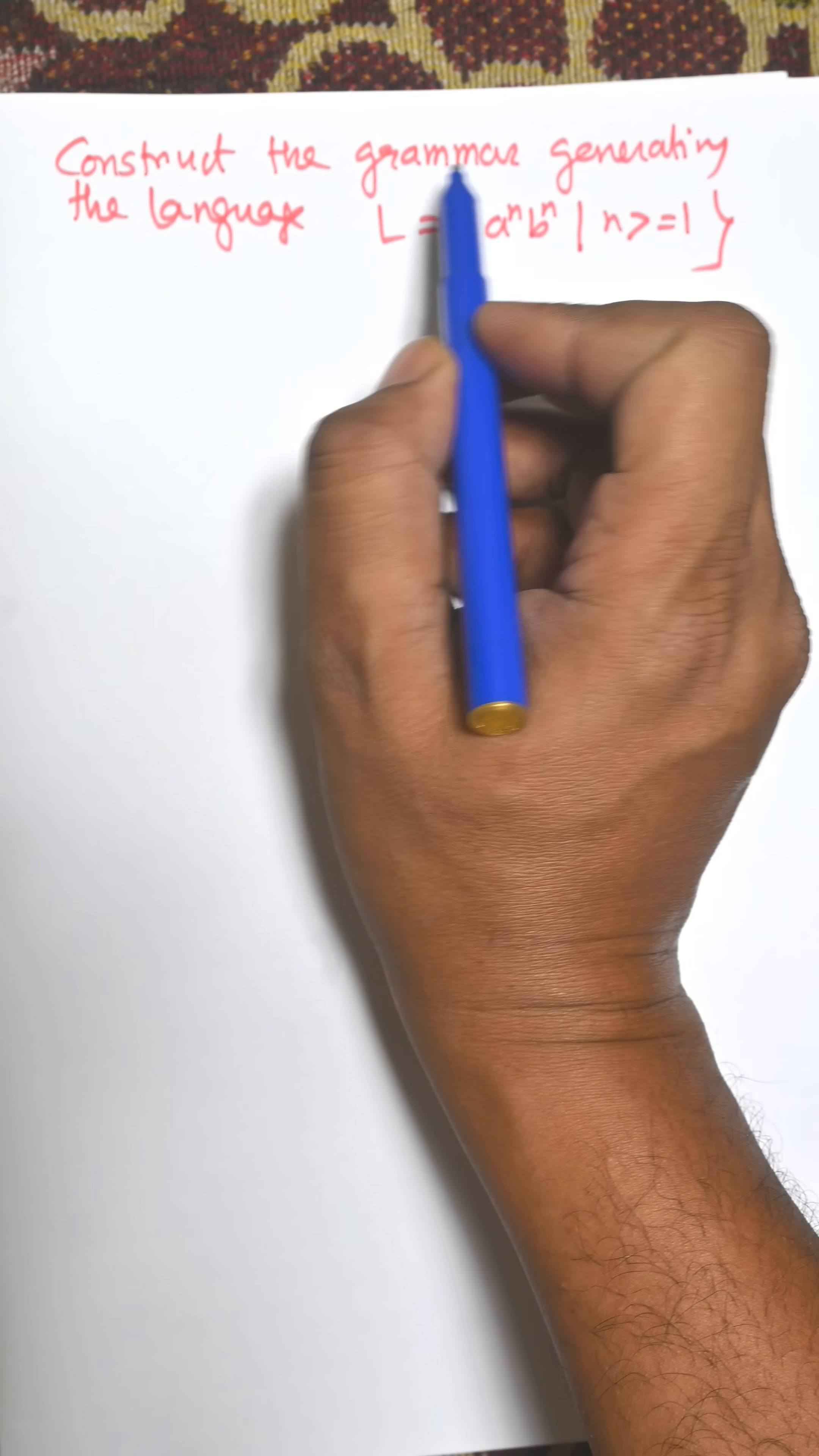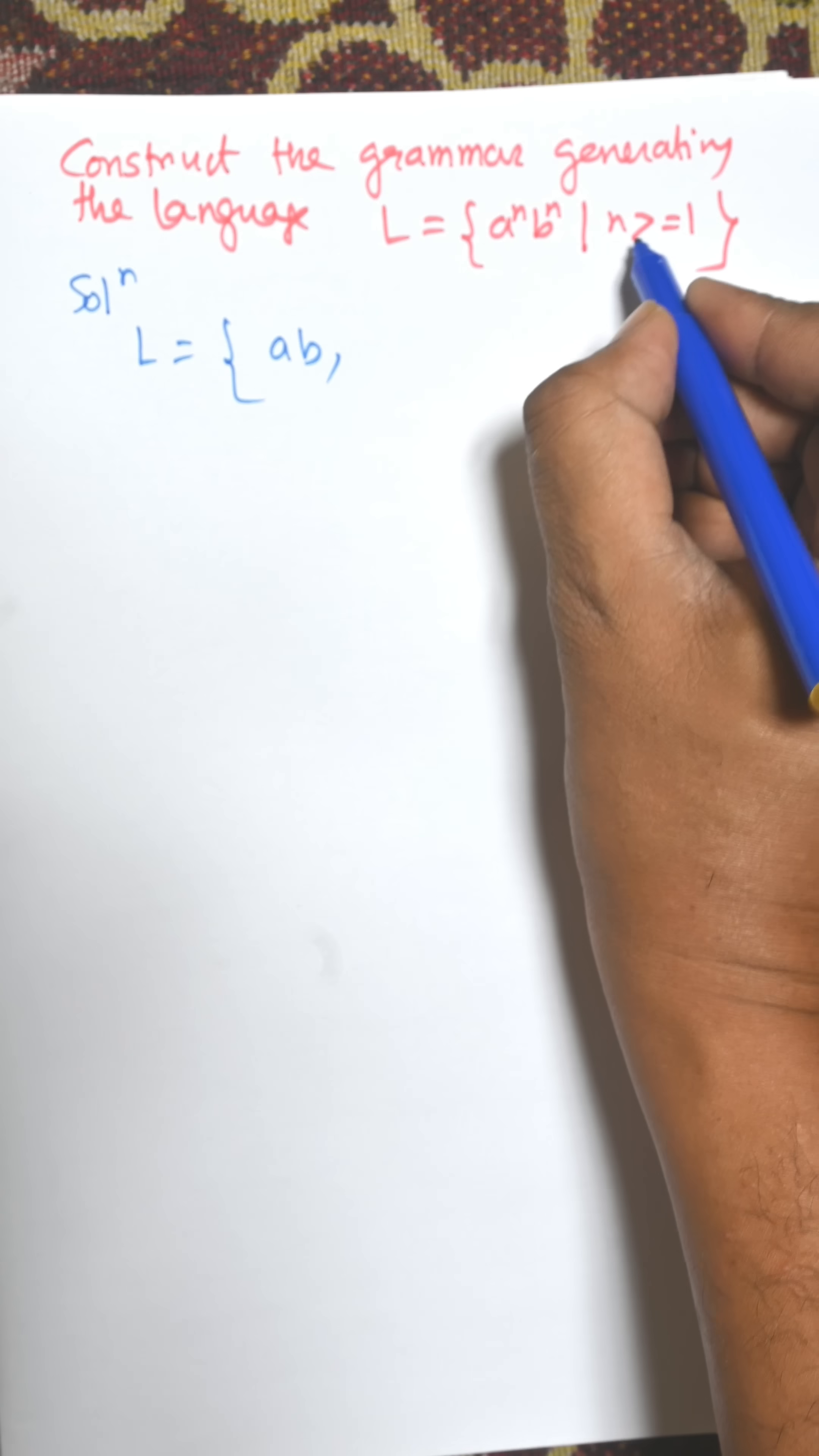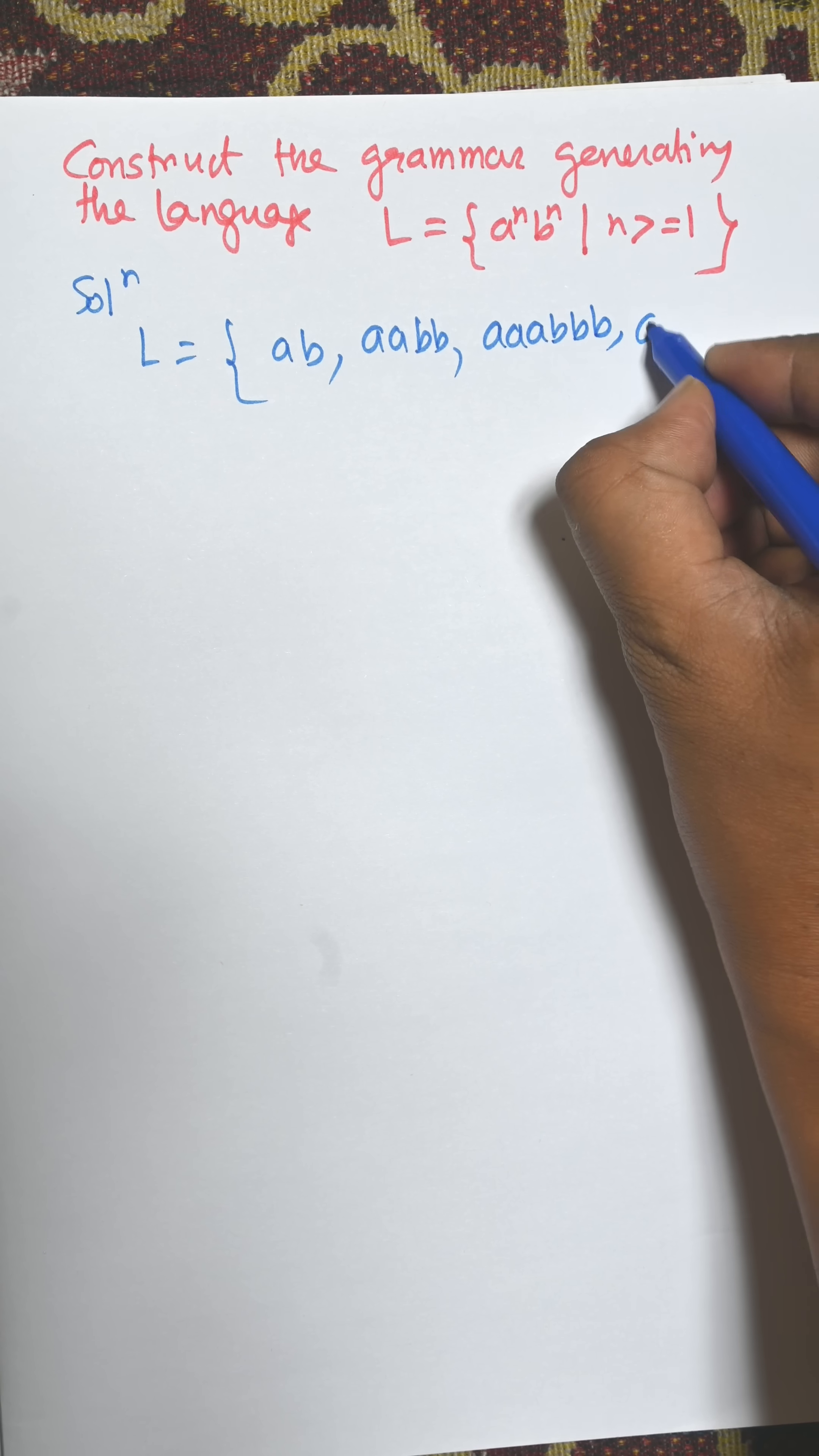In this video, I am going to construct a grammar generating the language L, where L equals: when n equals 1, that is AB; when n equals 2, AABB; when n equals 3, AAABBB, and so on.